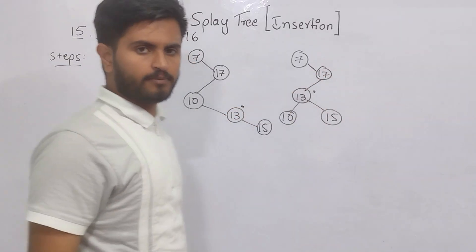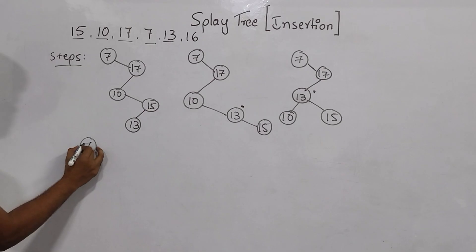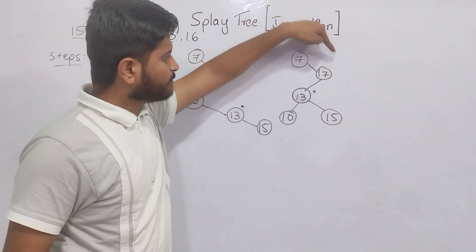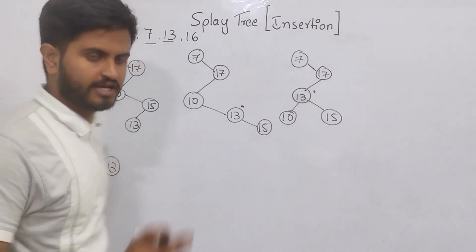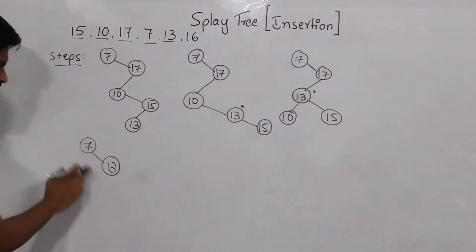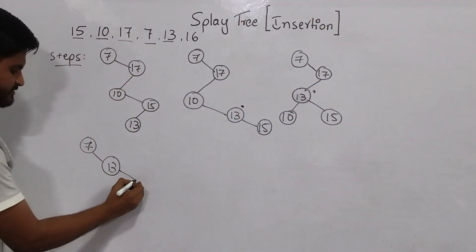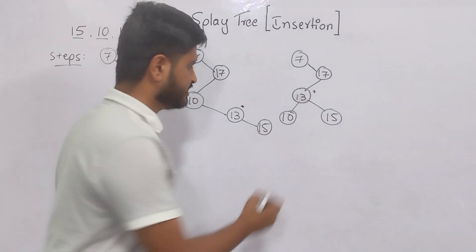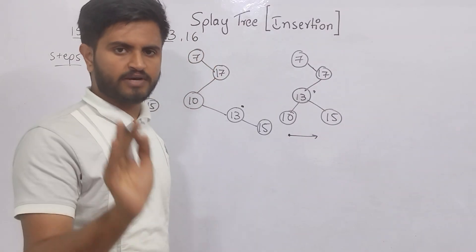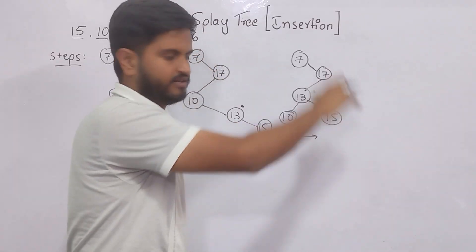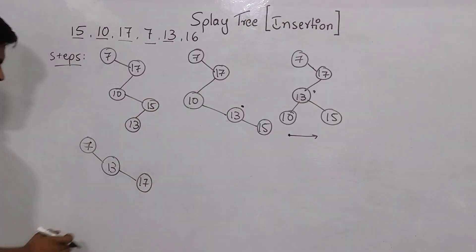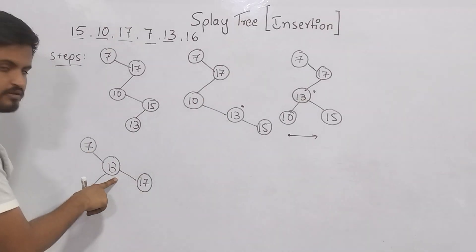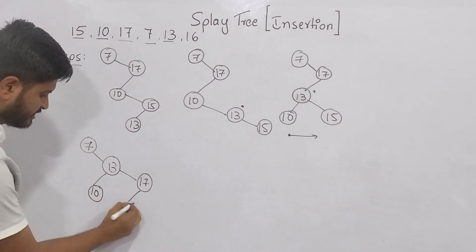I replace 13 with 17. 7 stays same. In place of 17, 13 comes. Now comparing from upside to downside, left to right: 17 is greater than 13 so it goes right. 10 and 15 are at the same level — go left to right. 10 is greater than 7 but less than 13, so 10 comes here. 15 is greater than 13 but less than 17, so 15 comes here. Simple — upside to downside, left side to right side.